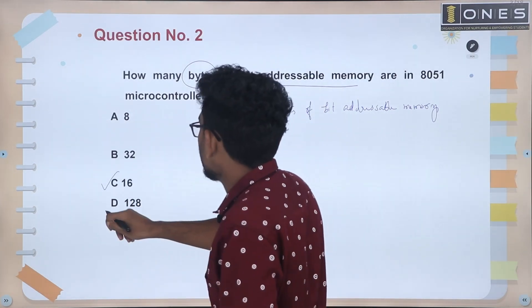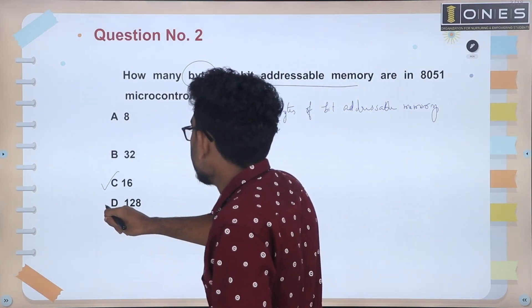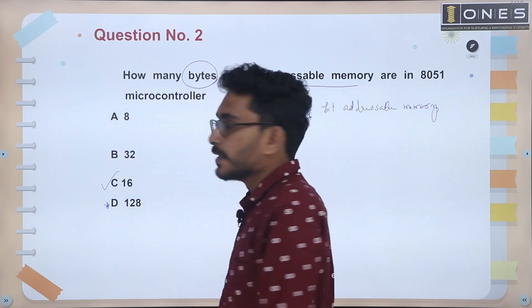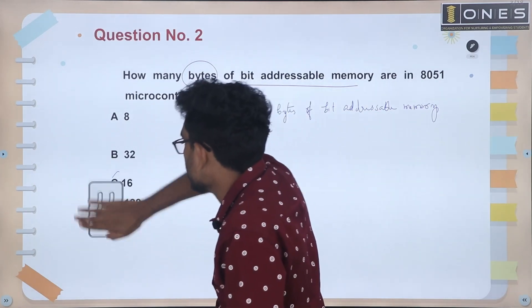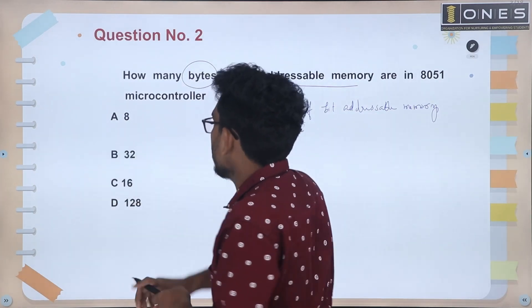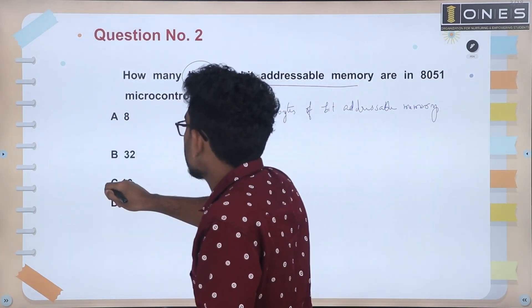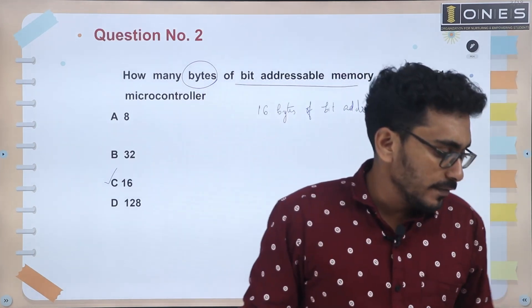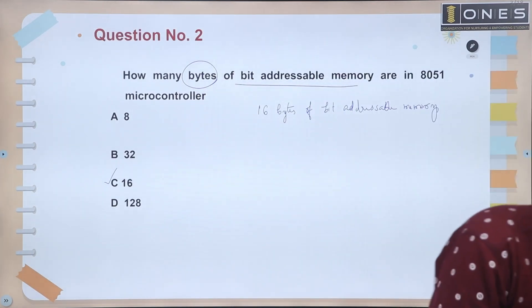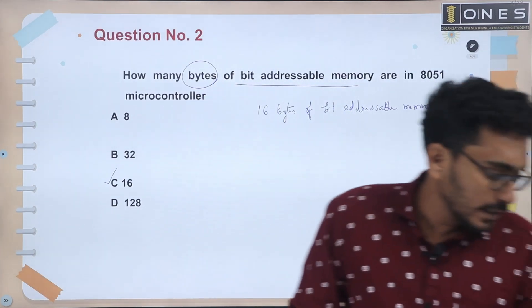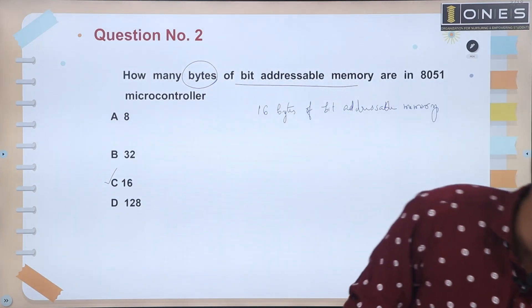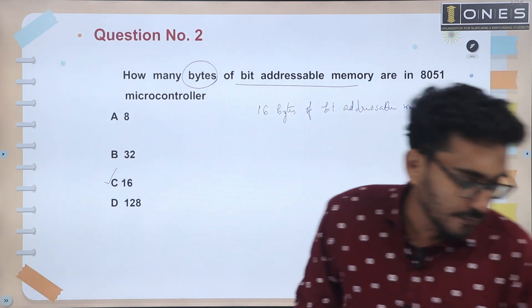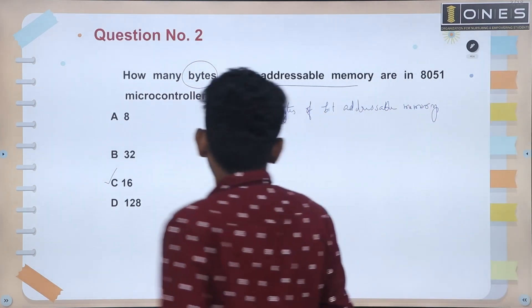The answer is 128 bits of bit-addressable memory, which is 16 bytes of bit-addressable memory, at address range 0020H to 002FH.